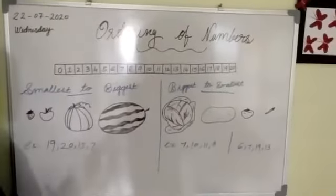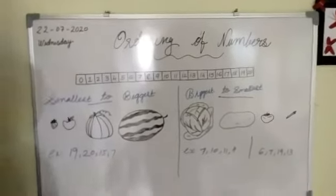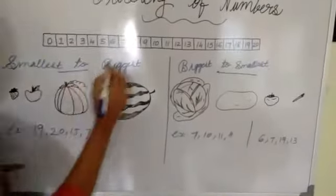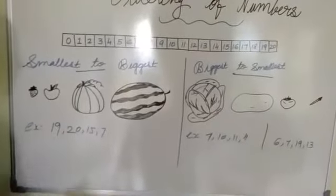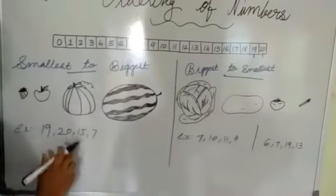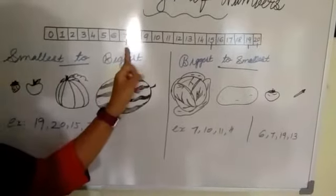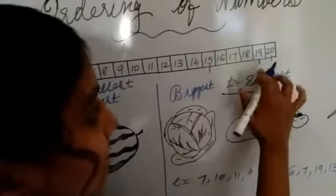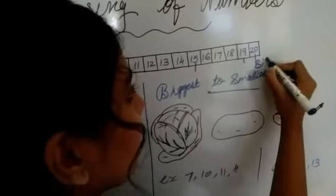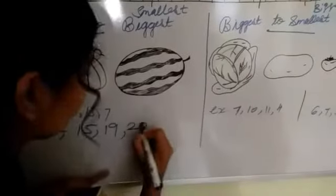Let us use the number strip to compare the numbers and arrange them from smallest to biggest. So the series is: 90, 20, 50, and 7. We mark these numbers on the number strip. Here 7 is the smallest, it is a one-digit number. Then 15, then 19, then 20 — 20 is the biggest number. So we write: 7, then 15, then 19, then 20.